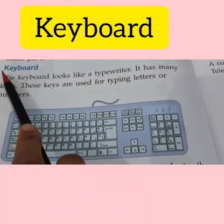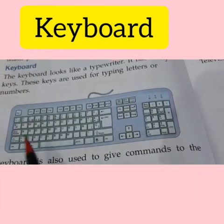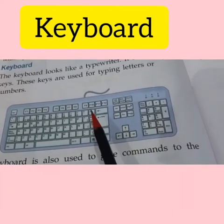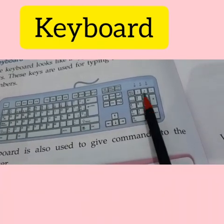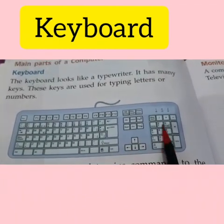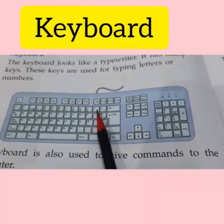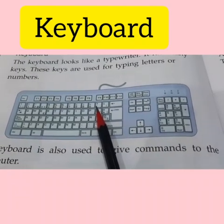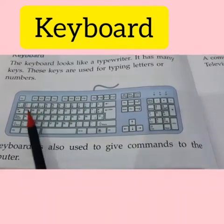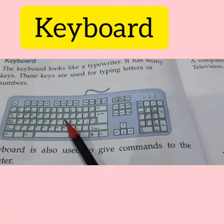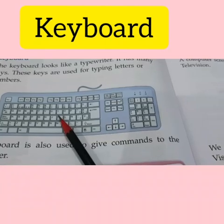Number 2 is the keyboard. Spelling of keyboard: K-E-Y-B-O-A-R-D. Keyboard. You can see many small buttons on the keyboard — these small buttons are called keys. Keyboard is an input device — I will tell you what an input device is later on. It looks like a typewriter. These keys are used for typing letters, numbers, etc. Keyboard is also used to give commands to the computer. With the help of the keyboard, we can type our name, our phone number, our birth date.